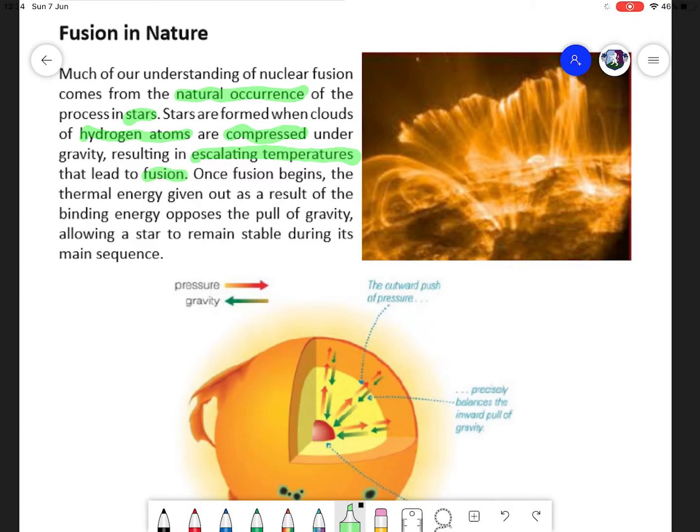The thermal energy released during this fusion process allows the star to maintain a stable structure. So the gravitational field pulling in is opposed by the energy released. As we know from when we covered binding energy, there is a large output of energy. So this sustains the star in its main sequence.